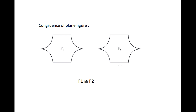For this, we can use the method of superposition. If the figure covers each other completely, then they are called concurrent. See the figure — F1 is concurrent to figure F2.